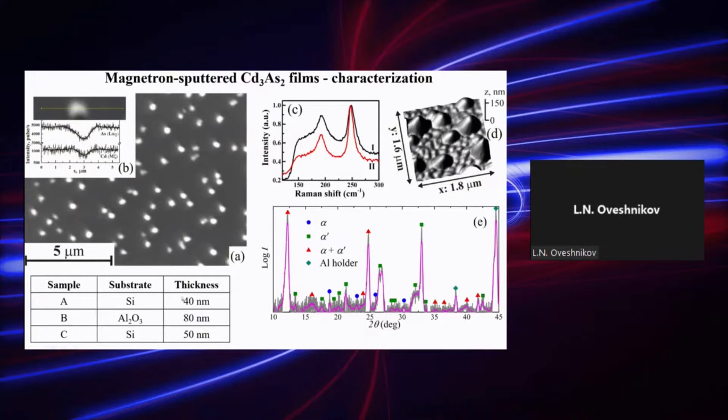We studied basically three samples made by magnetron sputtering. Two samples were on silicon substrates, one on sapphire substrates, and with thicknesses from 40 nanometers to 80 nanometers, meaning that it is the thickness of this flat part.